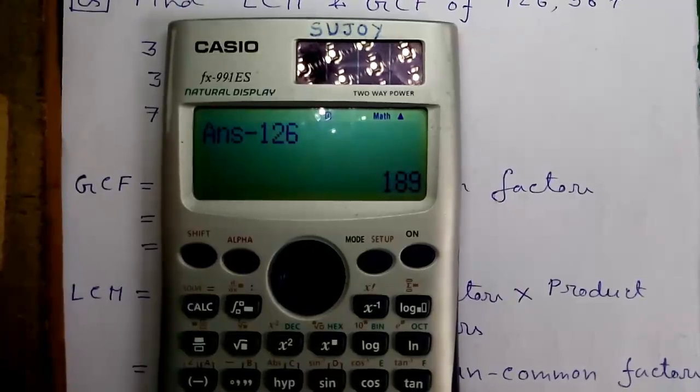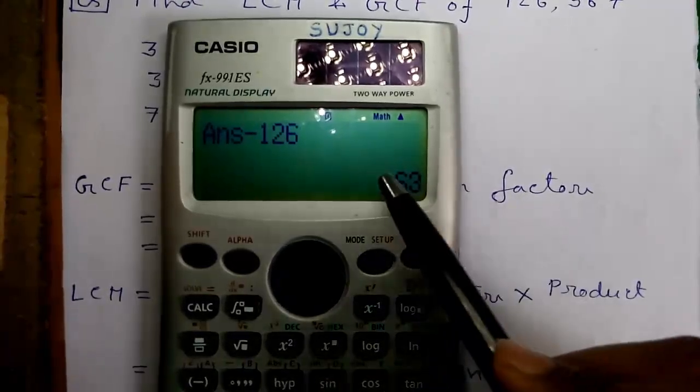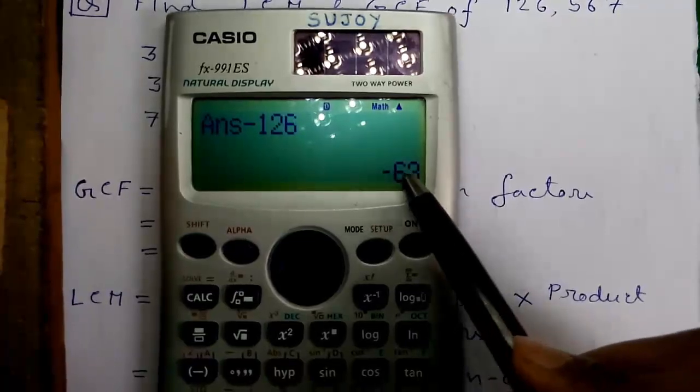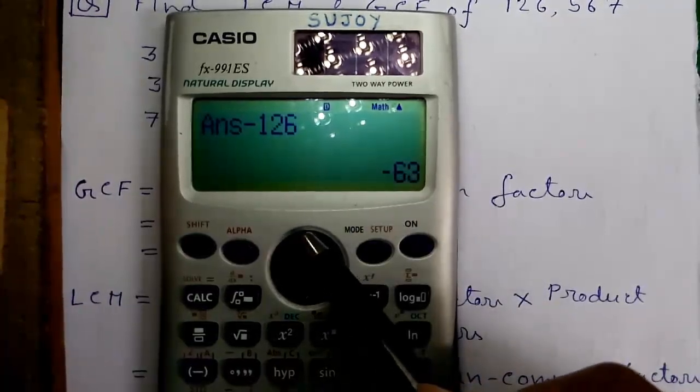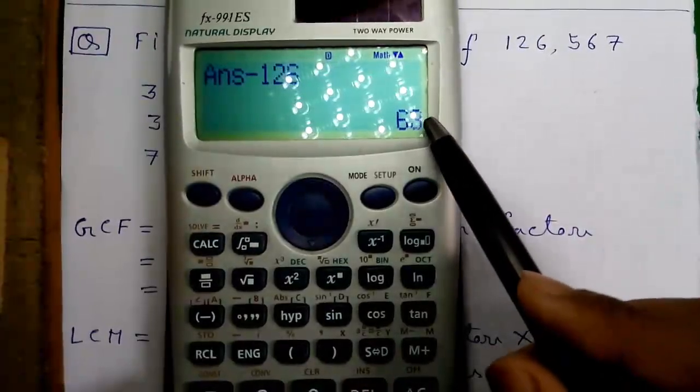Again press the equals button to continue the subtraction operation until you get a minus sign. And when you get a minus sign, press the joystick up and note the last value.